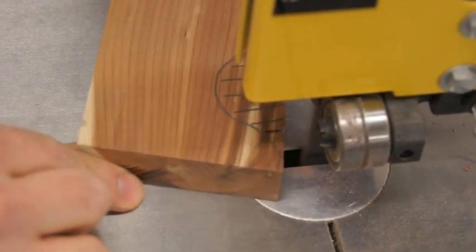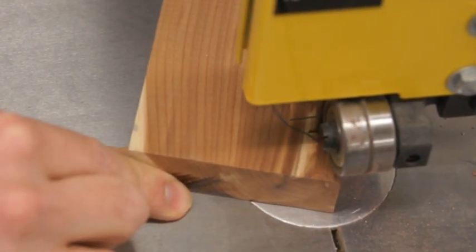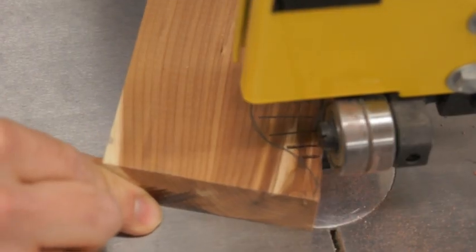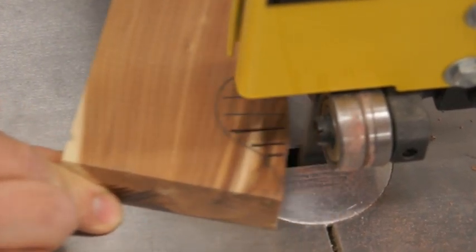Small cuts made to stop the blade from binding or twisting are called relief cuts. Relief cuts are needed when you are making a sharp, curved cut.